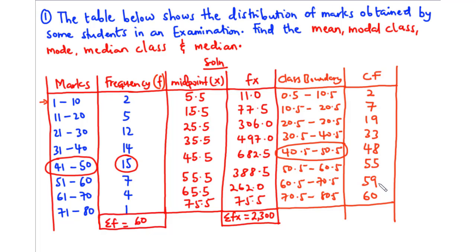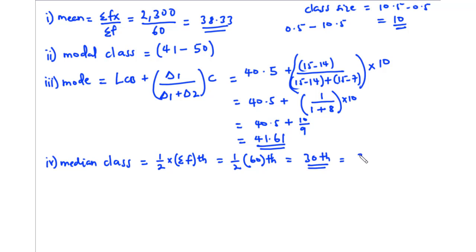We need the interval containing the 30th position. The interval 1–10 covers positions 1–2; 11–20 covers positions 3–7; 21–30 covers positions 8–19; and 31–40 covers positions 20–33. Since 30 falls between 20 and 33, the median class is 31 to 40.